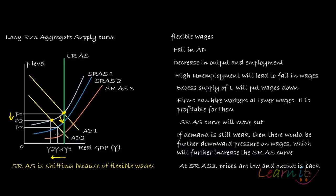What if demand doesn't improve over time? All of this has happened because the demand curve fell. If the demand curve doesn't improve, it will put further downward pressure on wages. Because of further downward pressure on wages, there will be more unemployment, and more unemployed workers will start accepting lower wages, causing the aggregate supply curve to shift further outward.